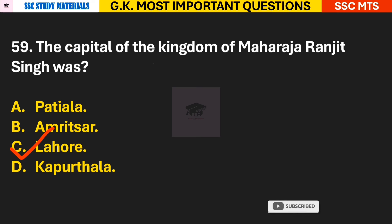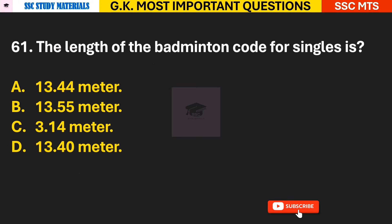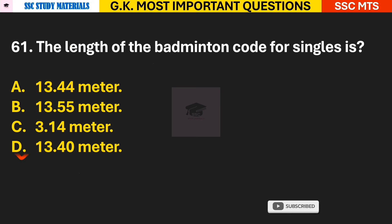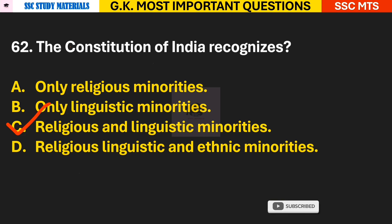Question 59: The capital of the kingdom of Maharaja Ranjit Singh was which city? Answer C — Lahore. Question 60: Mohenjodaro is also known as what? Answer — Mount of the Dead. Question 61: The length of the badminton court for singles is how much? Answer D — 13.40 meters.